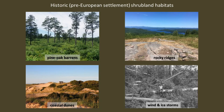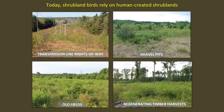Historically, large shrubland habitats occurred in unique communities such as pitch pine scrub oak barrens, on rocky ridgetops, and in coastal dunes. They were also created in other areas by periodic natural disturbances such as large wind and ice storms. All of these types of shrubland habitats are very uncommon today, and as a result, populations of many shrubland birds are declining dramatically. In most landscapes today, shrubland birds rely on human-created shrublands as their primary habitat. Some of the most important shrubland habitats in New Hampshire today include transmission line rights-of-way maintained in a shrubby condition by electric companies, active and abandoned gravel pits, shrubby old fields, and large young forest openings created via timber harvesting.